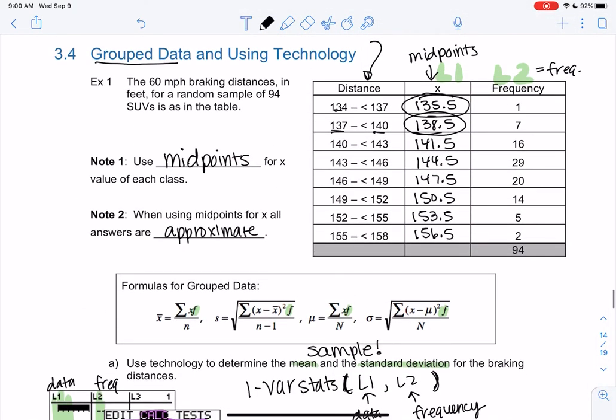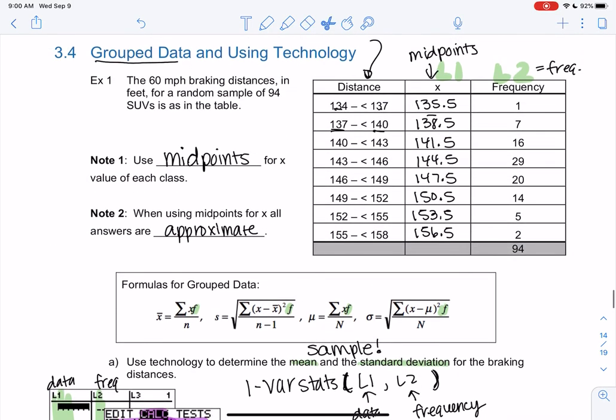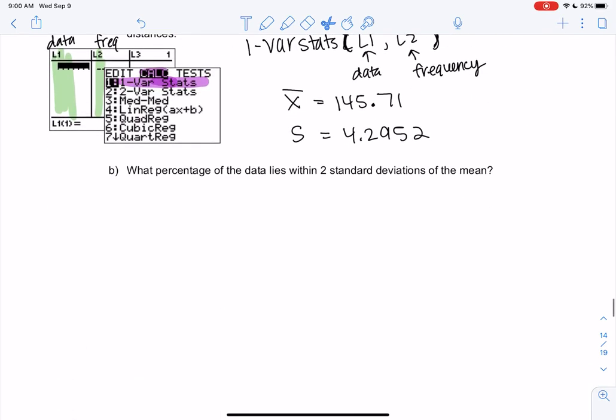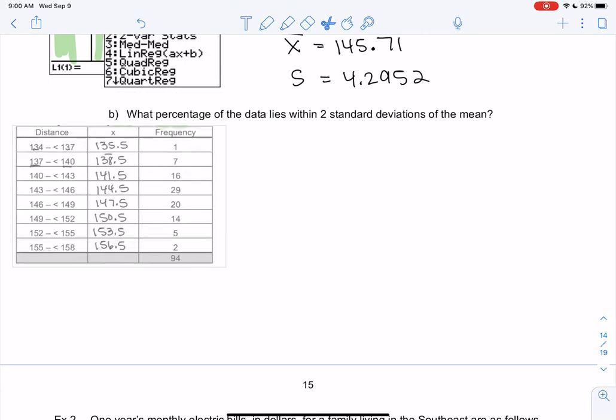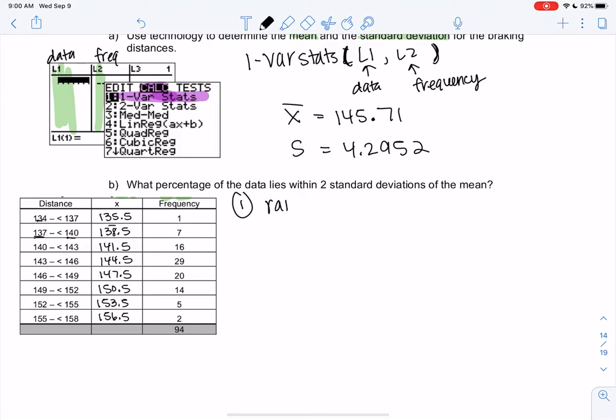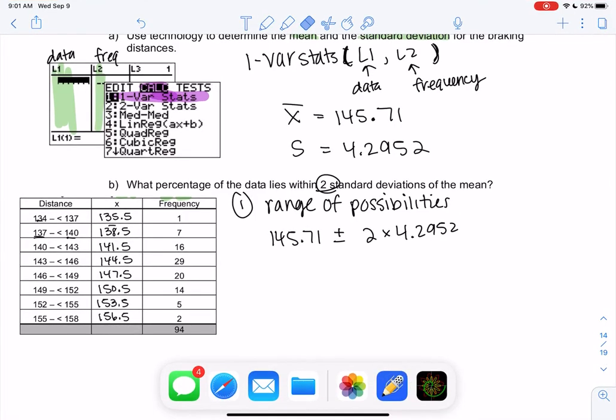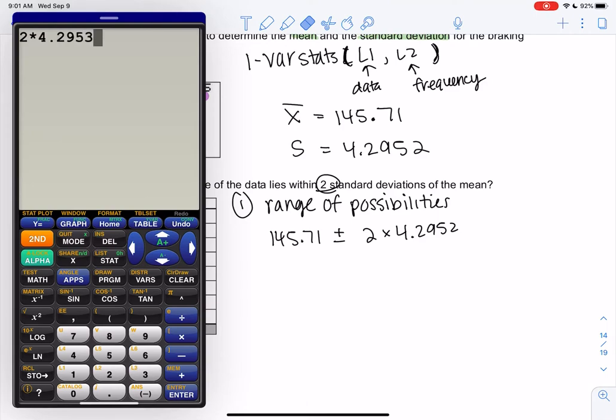What percentage of the data lies within two standard deviations? So I'm just going to copy the table so we don't have to look up. So we're going to calculate the range of possibilities and then we'll calculate the percent. So we'll do the range of possibilities. Two standard deviations means we're going to take the mean and we're going to add and subtract two times the standard deviation, not one.